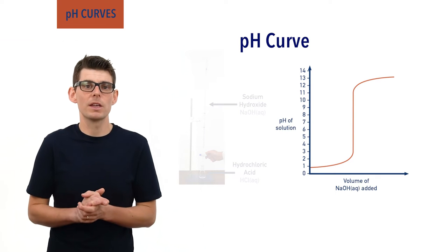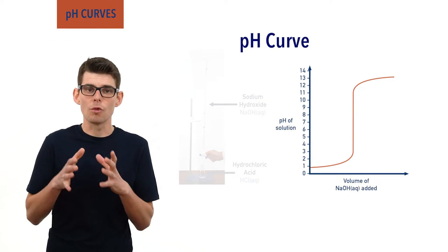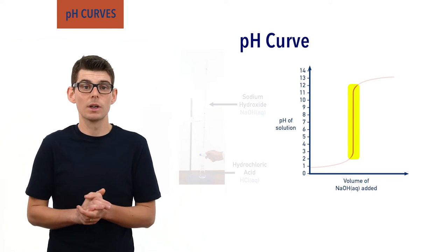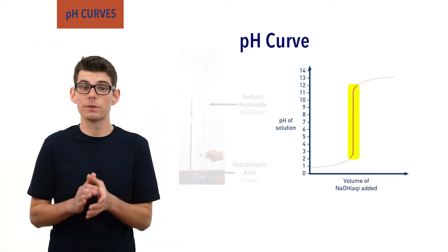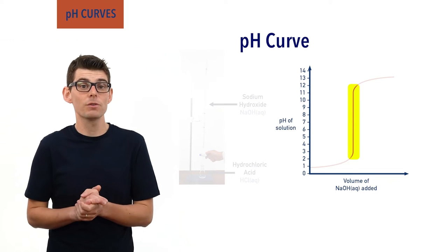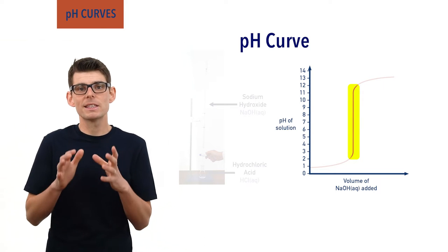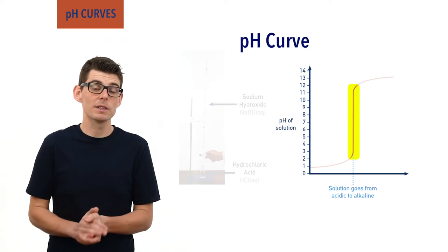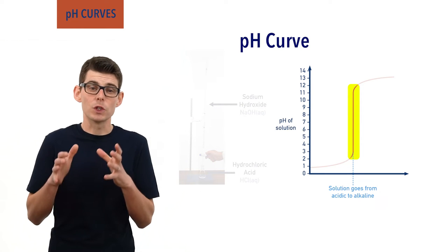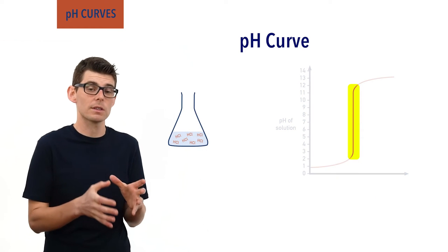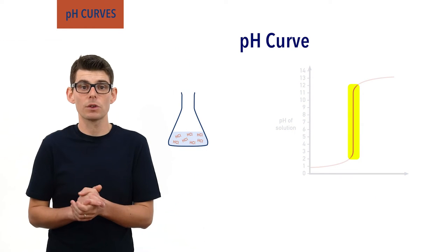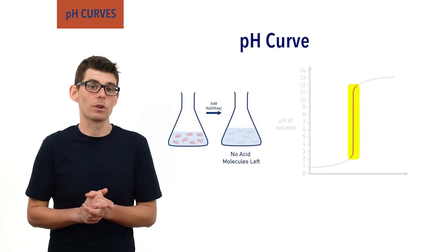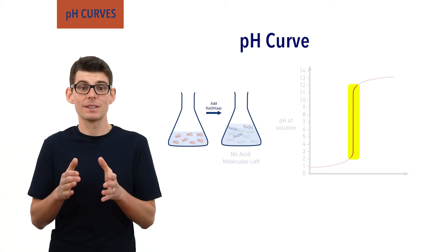If you track how the pH changes, there is a sudden rapid change where the solution appears to almost go straight from acidic to alkaline. It is this rapidly changing part of the pH curve that we are really interested in with a titration. It is at this point that the solution is switching from acid to alkali — all the acid molecules that were in the flask at the start have reacted with added hydroxide ions. There are no acid molecules left to react, and any more hydroxide ions being added just make the solution alkaline.